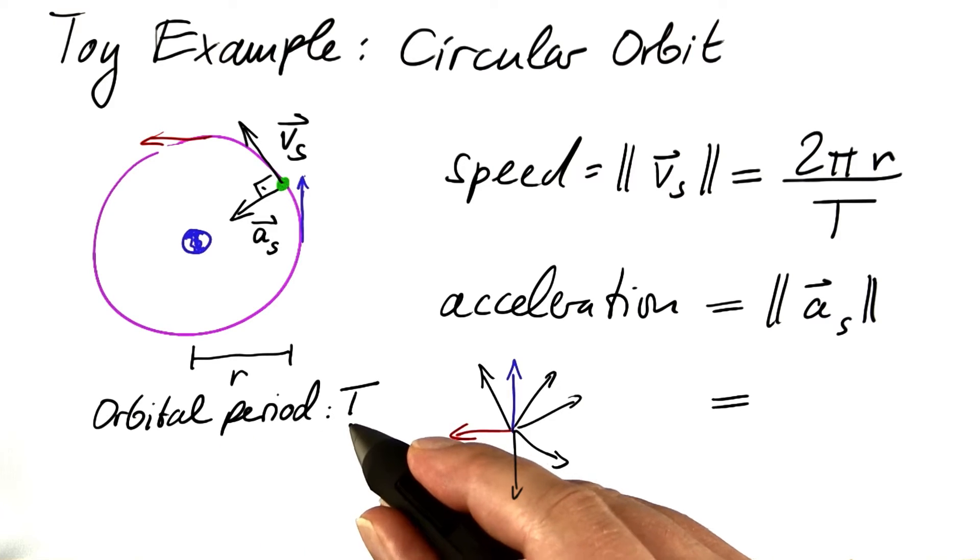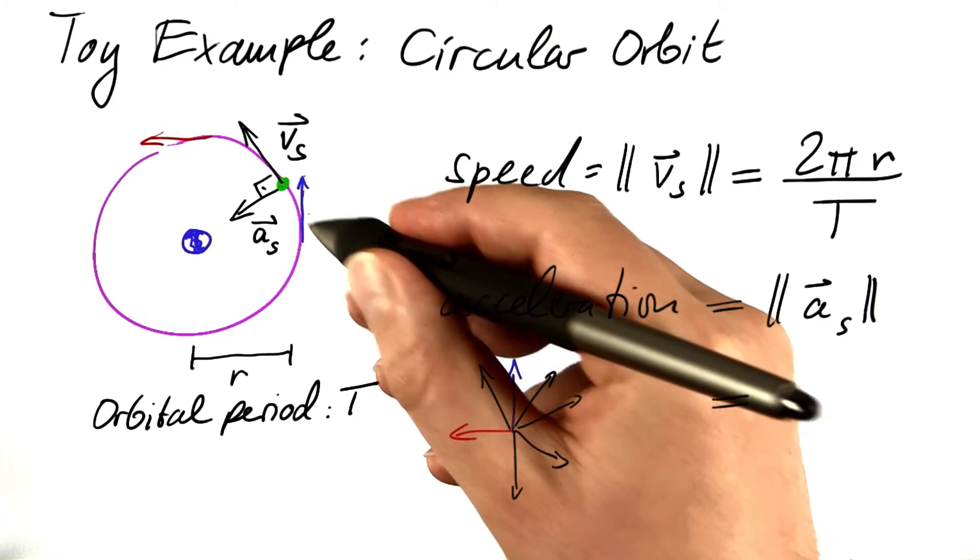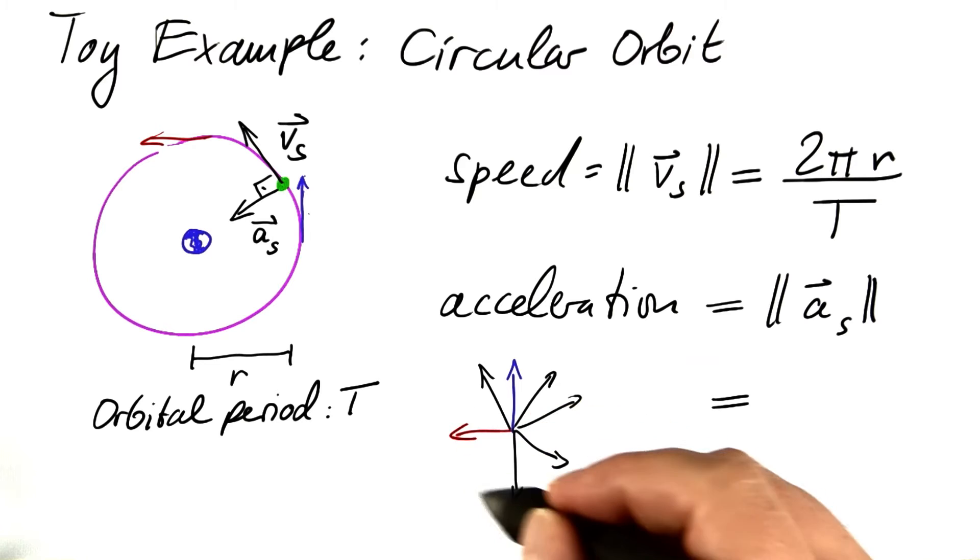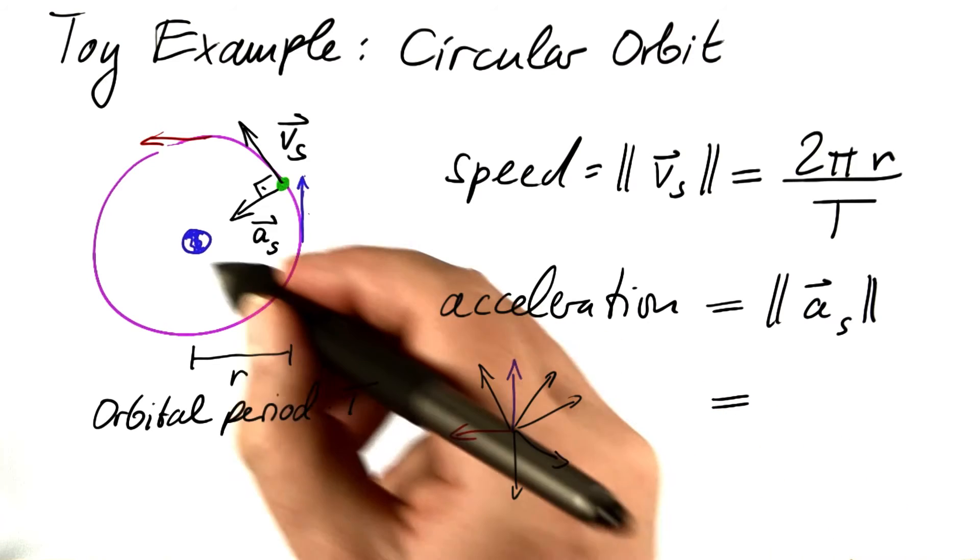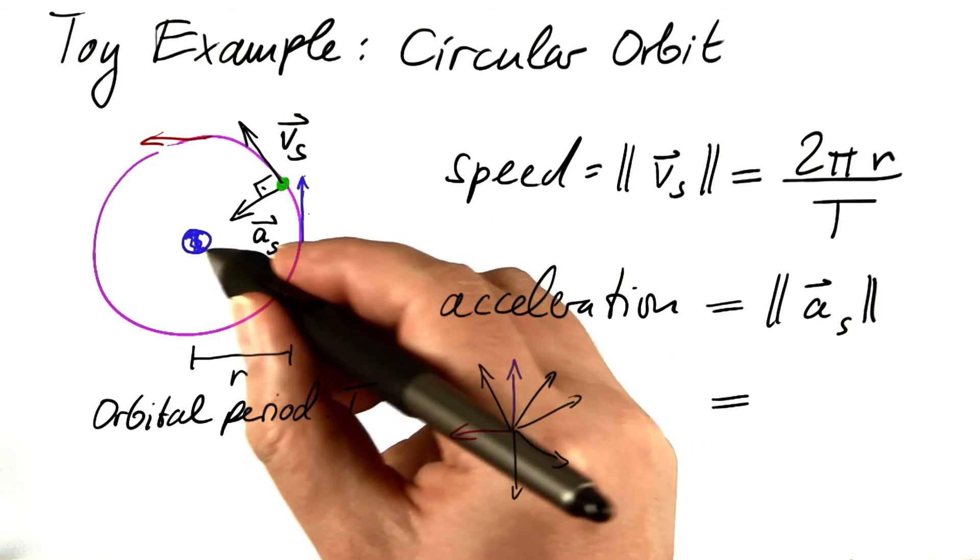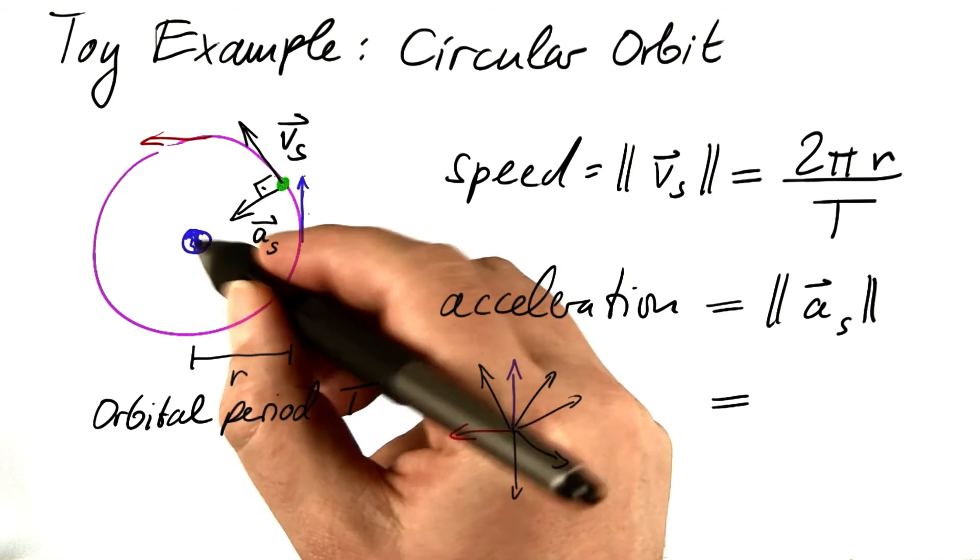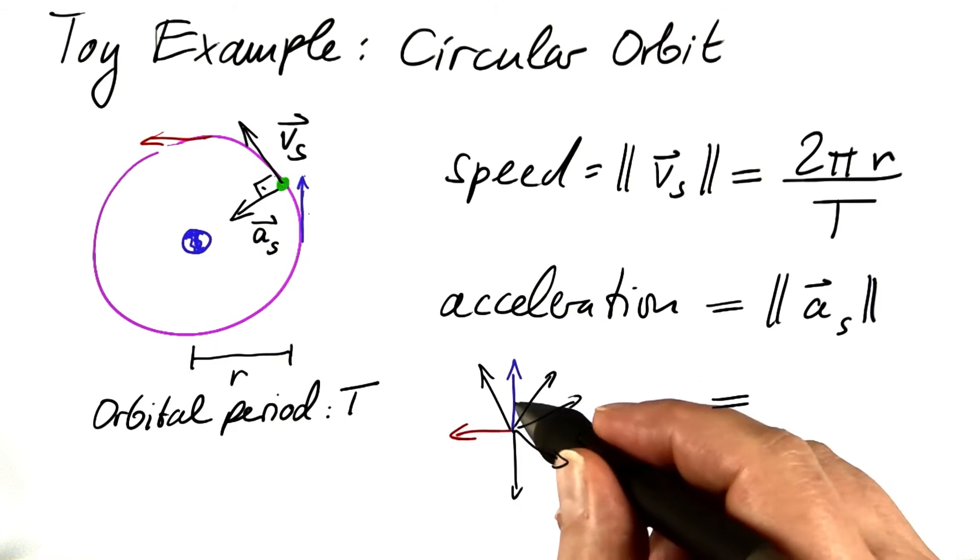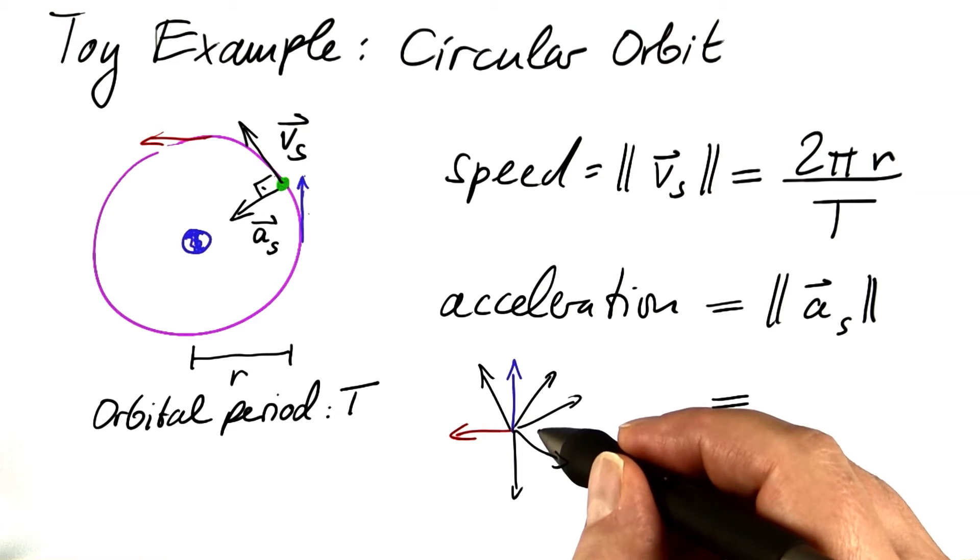After one orbital period, it's going to be that blue vector again, with a phase shift of 90 degrees. So we can say that the velocity vector executes the same circular motion as does the position vector, but we have a phase shift of 90 degrees between them.